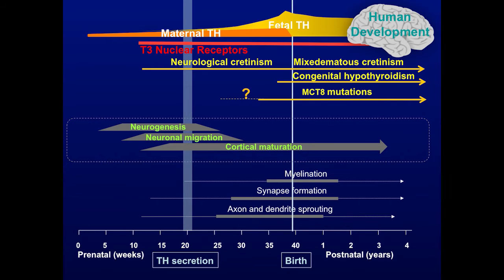We know that around week 30, lesions can already be demonstrated in the brain of MCT8 patients, but we don't know whether there are lesions established before week 30. And we know very little on the histopathological consequences of brain structure in neurological cretinism, myxedematous cretinism, or congenital hypothyroidism for many obvious reasons.